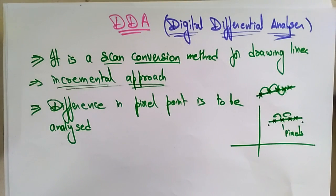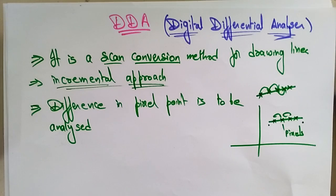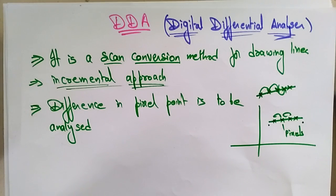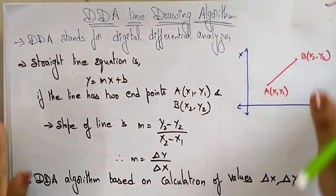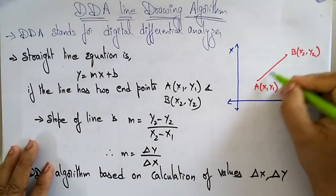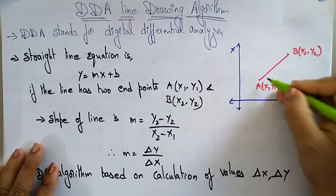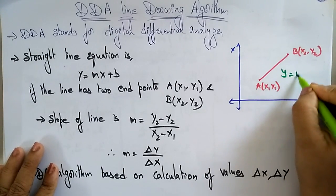Before understanding the DDA, we must understand what a line is and how it is defined. In this video, I'll explain the introduction part of DDA, then the algorithm, and then an example. A line is two points in a plane connected by a line segment, falling under the equation y = mx + b.